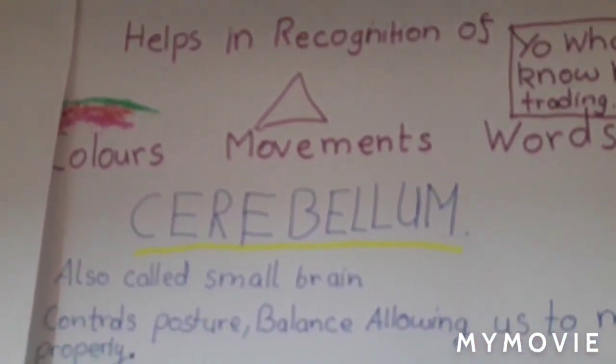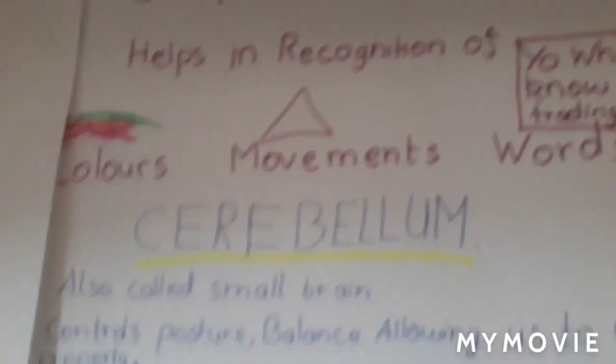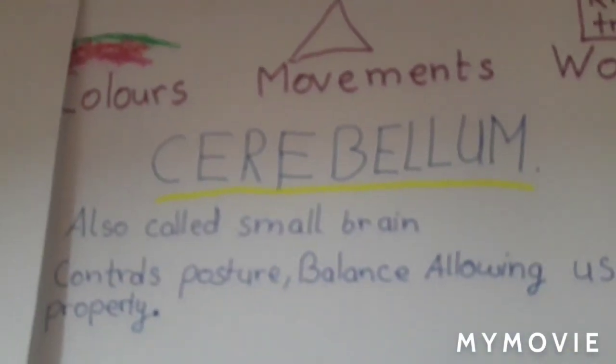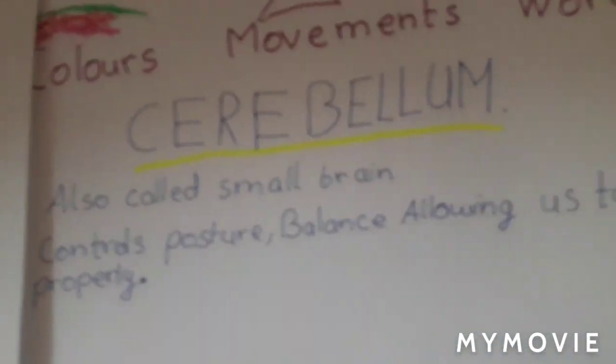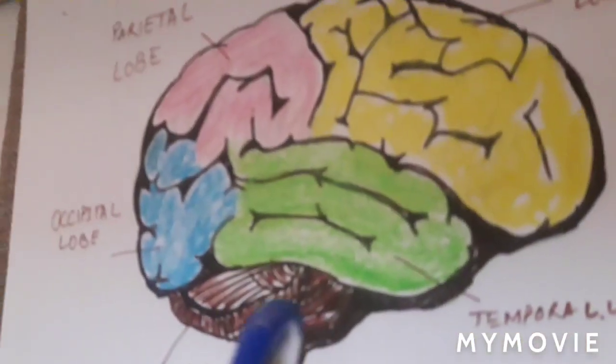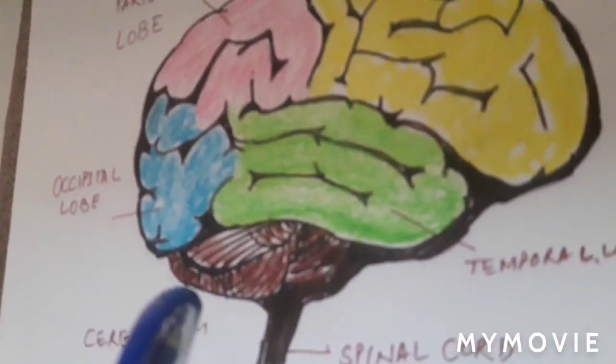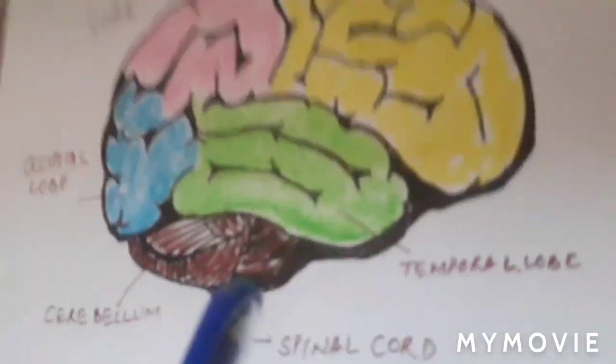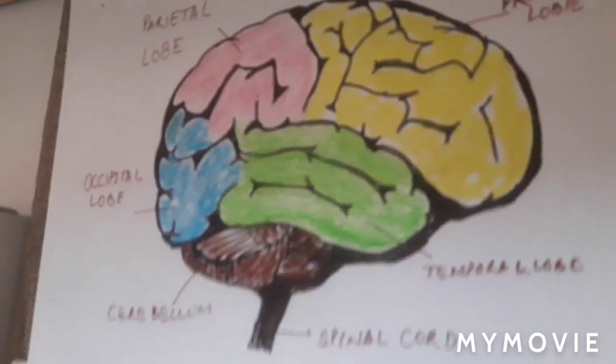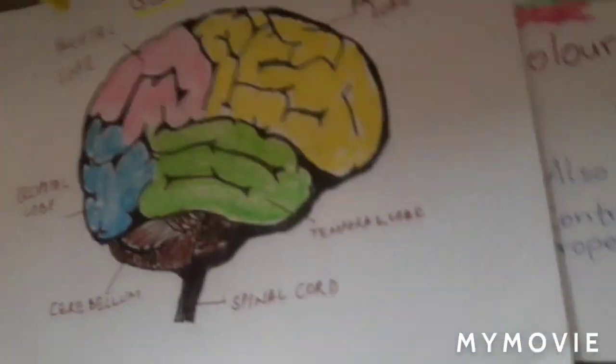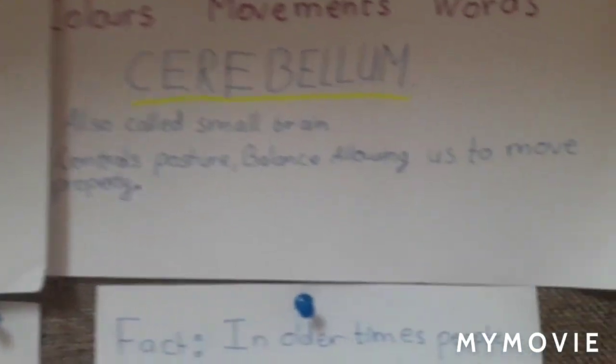Now let's look at the cerebellum, also called the small brain. It controls posture, balance, and allows us to move properly. You can see this structure here — it is a very important part of the brain.